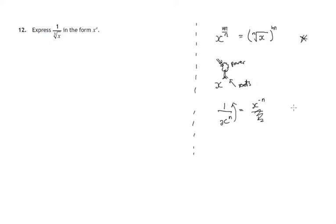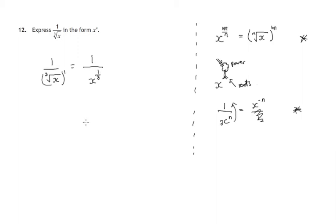So these are the two rules, the two laws of indices that we're going to use. Let's look at, first of all, the cube root of x. Powers at the top, roots at the bottom. It's a cube root, and what's the power? Well, basically it's just to the power 1. So there'll be a 1 at the top — power 1, root 3 — cube root to the power 1. So it's x to the power 1 over 3, using this law of indices.